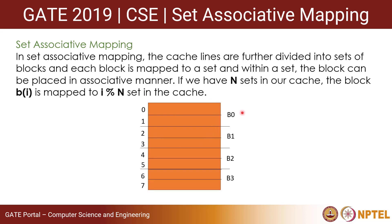For example, with a cache having 4 blocks (b0–b3) and 2 sets (s0 and s1), block b0 maps to 0 mod 2, which is s0, and within s0 it can go to either b0 or b1. Set associative mapping is a middle ground between direct mapped and fully associative mapping.